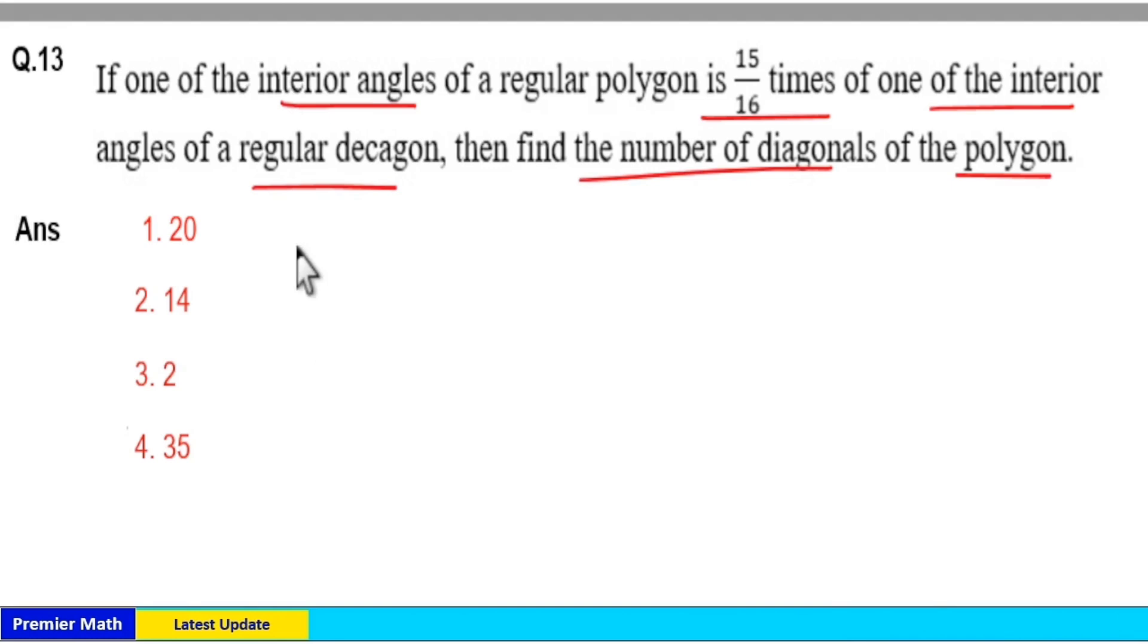Here, the interior angle formula is equal to (n-2)/n × 180. So, the interior angle of a polygon is 15/16 times the interior angle of a decagon. Decagon means 10 sides.